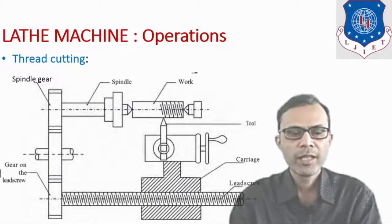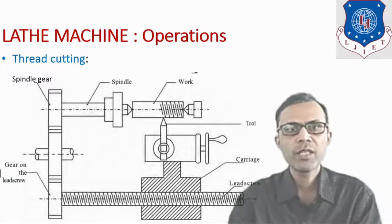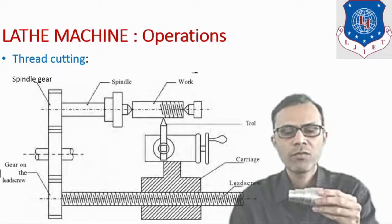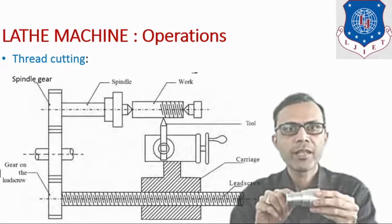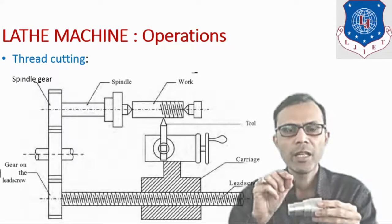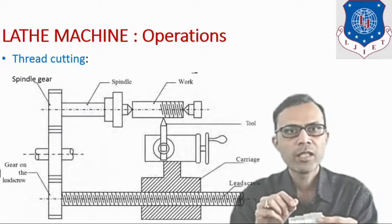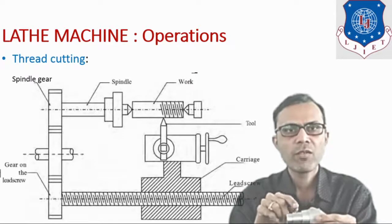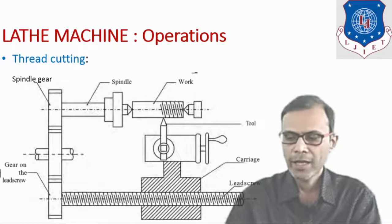The next type of operation is thread cutting. It is the operation to produce a helical groove on a cylindrical surface. Here on this workpiece, we have produced the required thread. This is known as the thread cutting operation. Depending on the type of thread, we have to select the type of tool. Here we have produced a V-thread, so we have selected a V-tool. The setup is shown in the diagram.